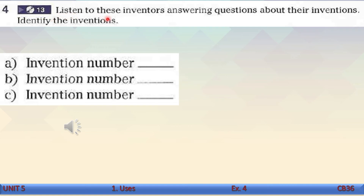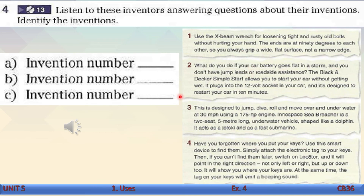Listen to these inventors answering questions about their inventions. Identify the inventions. We're still on page 36 of the course book. You will hear three inventors answering questions about their inventions from task two. Your task is to identify the inventions by writing the correct numbers. Now listen and do the task.